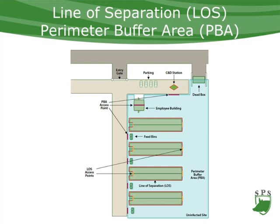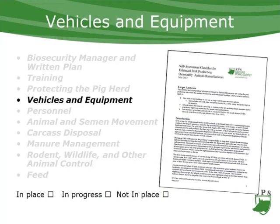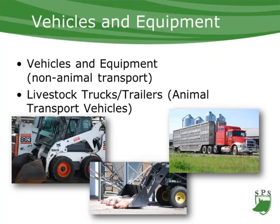Moving on to vehicles and equipment — those not hauling animals — the checklist states that vehicles and equipment need to be disinfected prior to entering the perimeter buffer area to decrease the viral load around the building. Vehicles hauling animals to the site should have been cleaned before the animals were loaded for delivery.